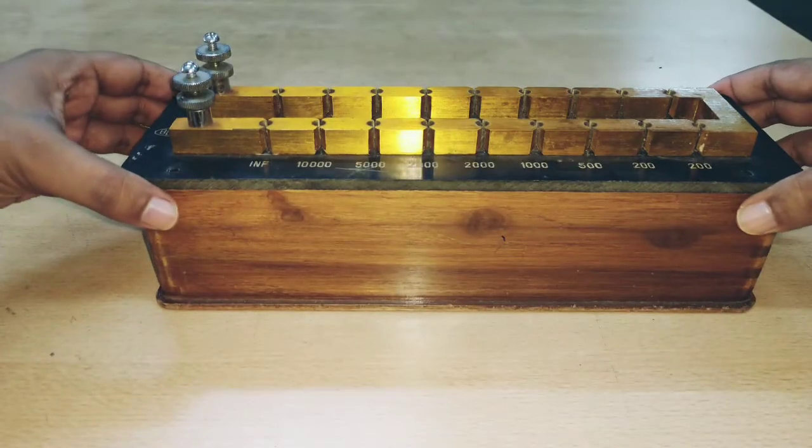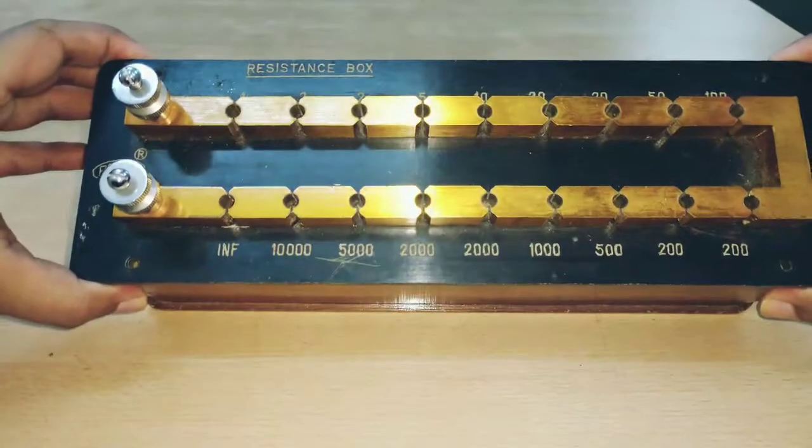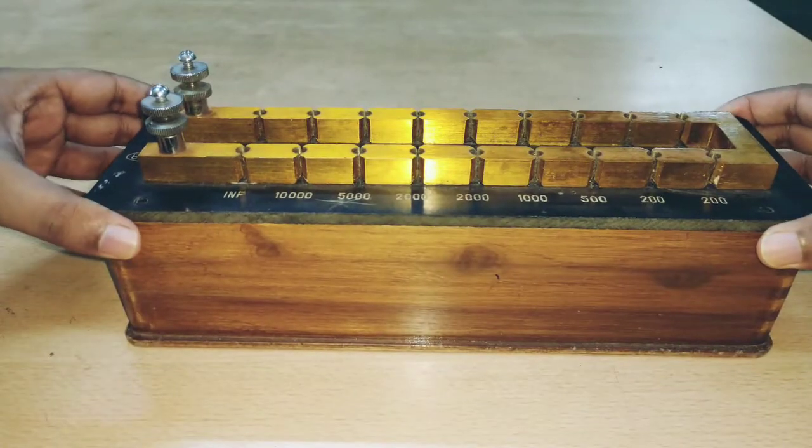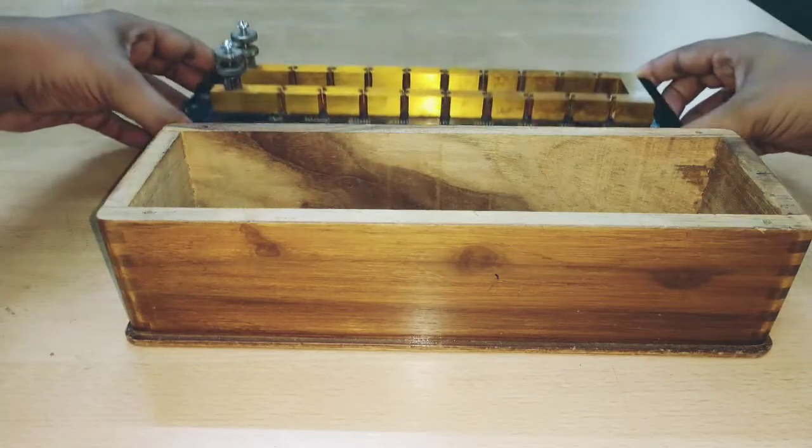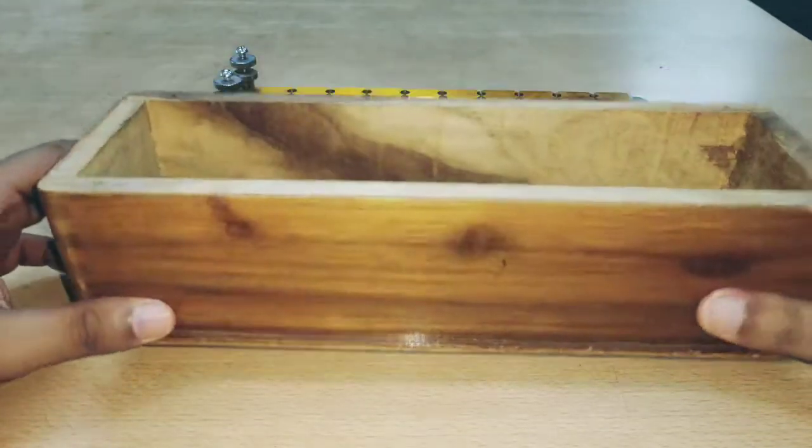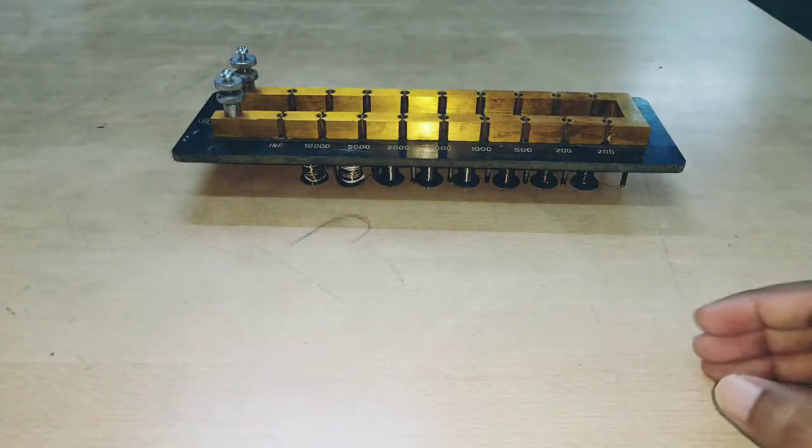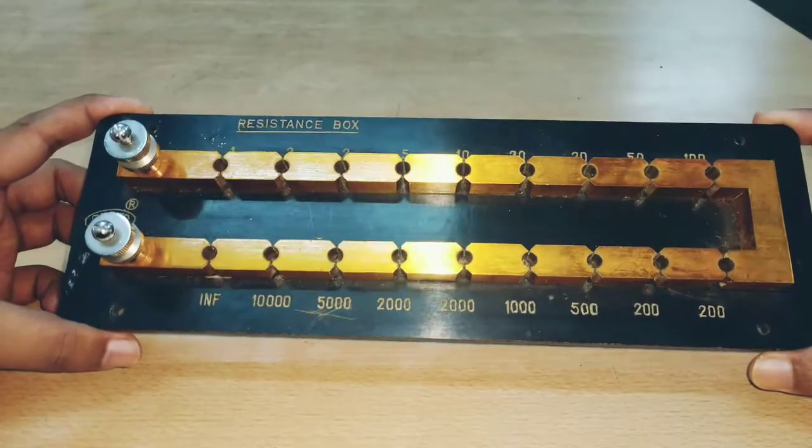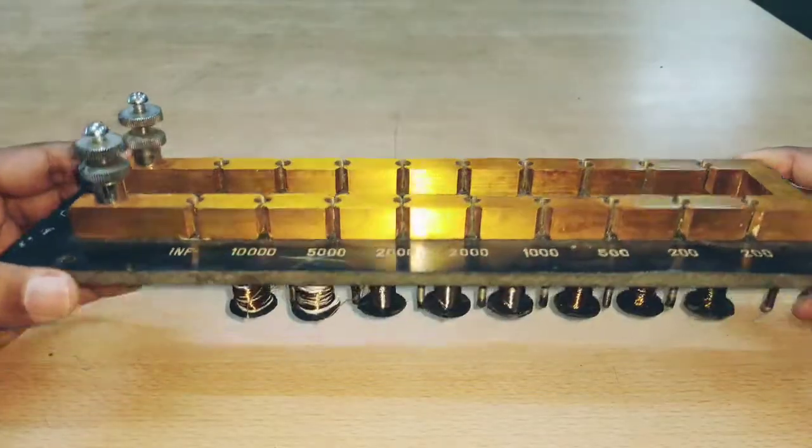So let's see what's there inside your resistance box. Here it is, we've already removed the screws. Inside this box, basically it's a casing, so this is not what is really necessary for us. What is really important for us is what is there under this.